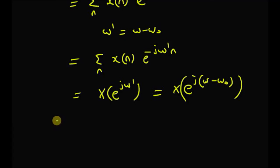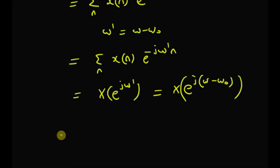To summarize, in this video we looked at three properties of DTFT. The first is the linearity property, which states that the DTFT of a linear combination is the same as the linear combination of the DTFTs of the individual signals. The second is that the DTFT of a time shifted signal is the original DTFT multiplied by an exponential e power minus j omega k, where k is the shift in time. The frequency shifting property states that the DTFT of a signal multiplied by an exponential is the original DTFT shifted in frequency by omega nought. Thanks for watching.